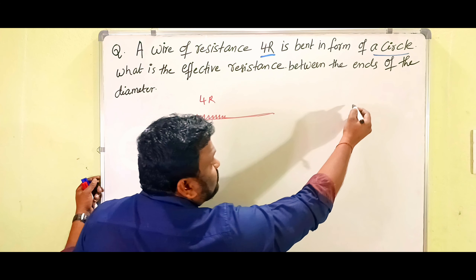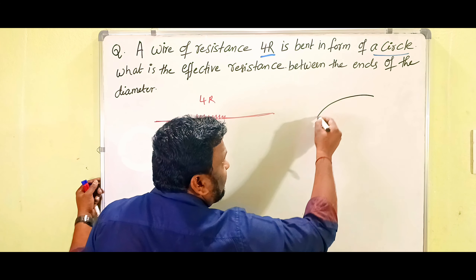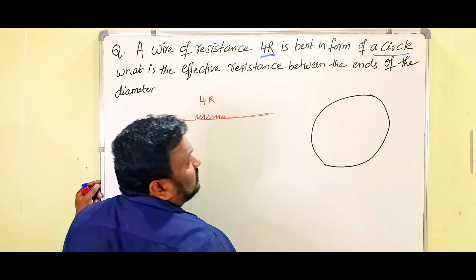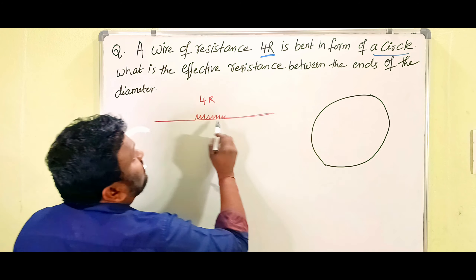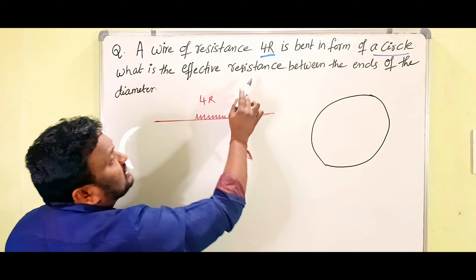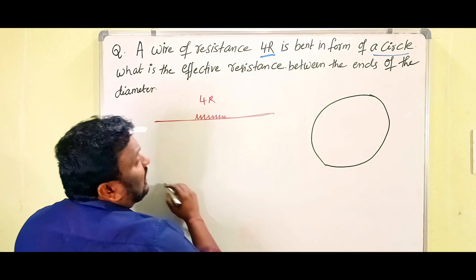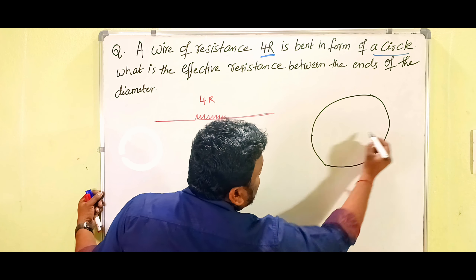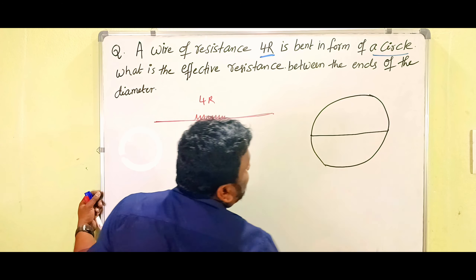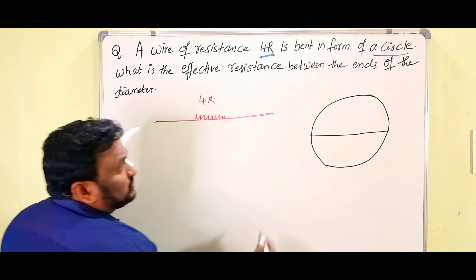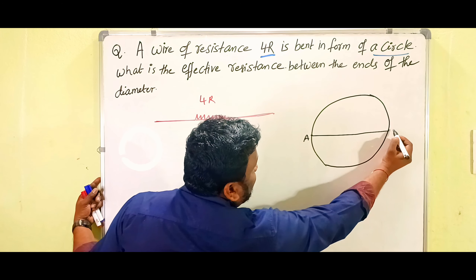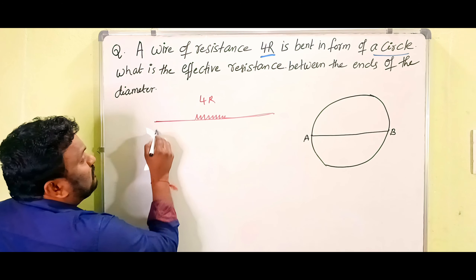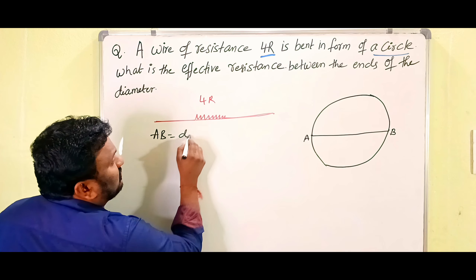Children, it's very simple. We are given a wire having resistance 4R — I am showing it like this. Now that wire is bent in the form of a circle, like this.